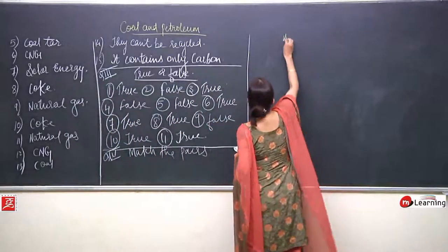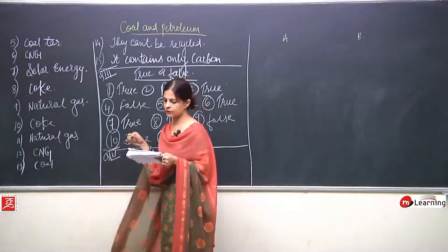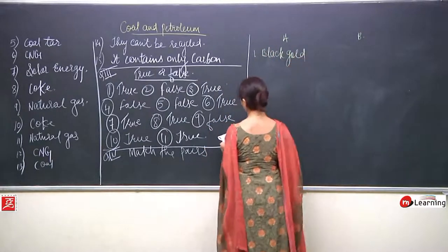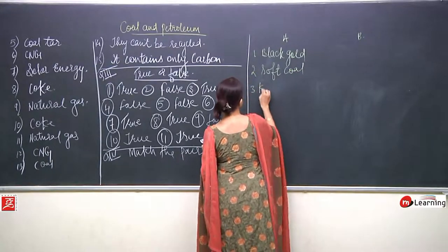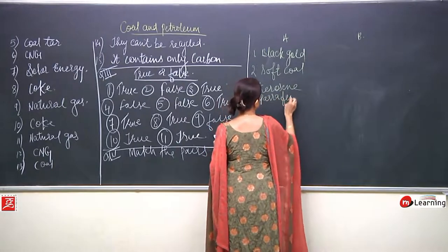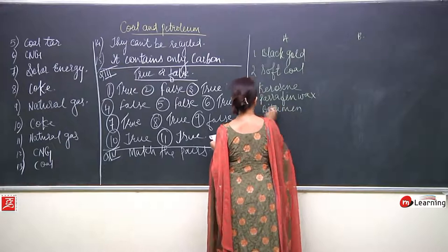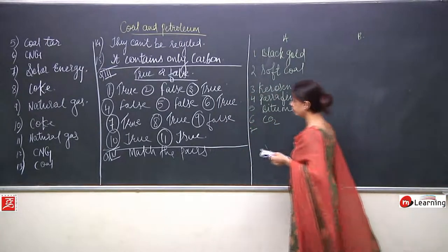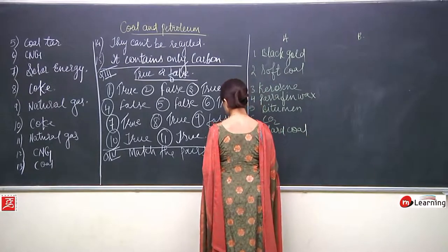Okay, so A and B. I will have to write first. Now when we discuss the column, so it is black gold, okay then it is soft coal. C is kerosene, the third one. Fourth one is paraffin wax. Fifth is bitumen. Sixth is carbon dioxide. Seventh is hard coal. Eighth one is carbonization.